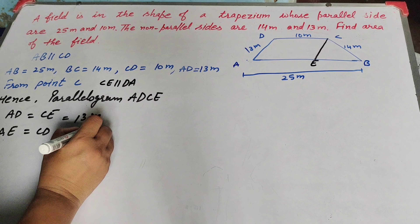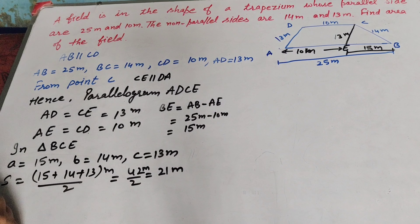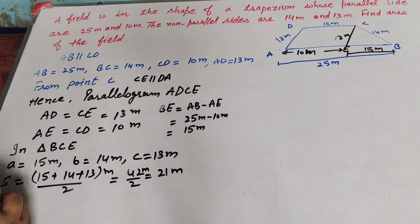Now we find the area of triangle BCE. In triangle BCE, the three sides are: A equal to 15 meter, B equal to 14 meter, and C equal to 13 meter. We find the area using Heron's formula. First we find the semi-perimeter: S equals 15 plus 14 plus 13 over 2, which is 42 over 2, equal to 21 meter.